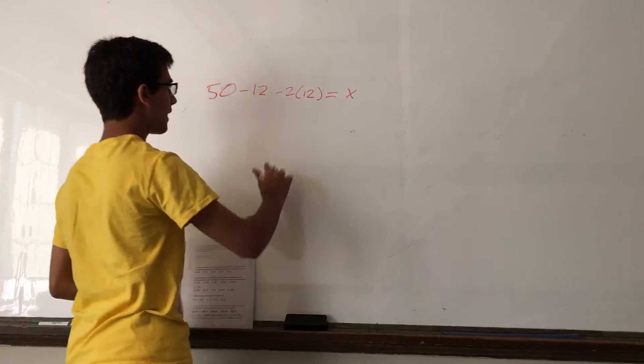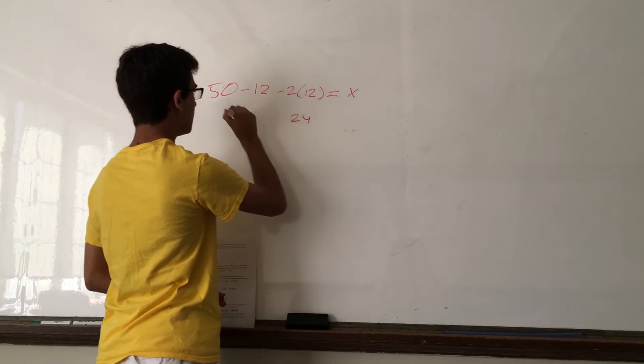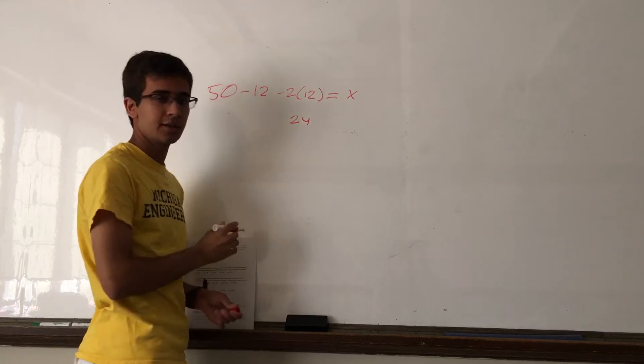So, if we solve this out, 2 times 12 is 24. And 50 minus 12 is 38.